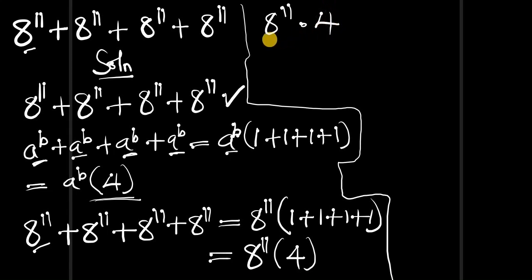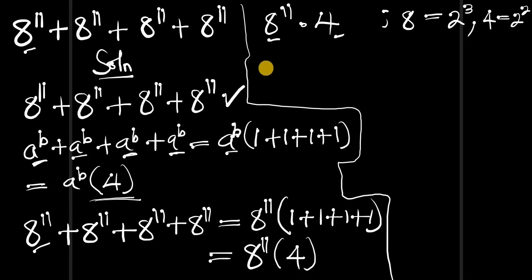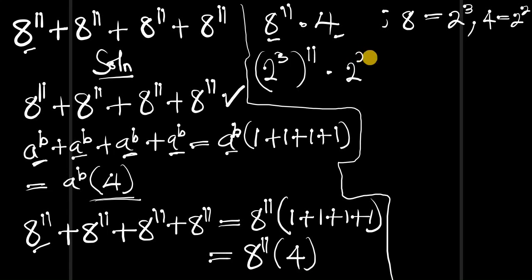Now, we can make these bases identical. Instead of 8, we use 2 to the power of 3, and instead of 4, we use 2 to the power of 2. So we have (2 to the power of 3) all to the power of 11, times 2 to the power of 2.